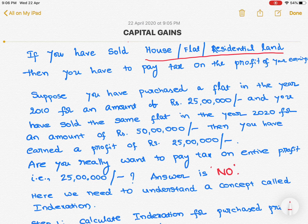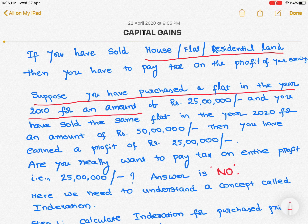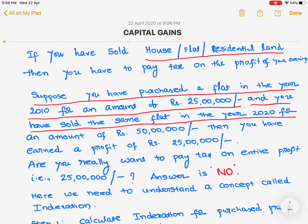For illustration purposes, consider this example. Suppose you purchased a flat in the year 2010 for Rs. 25 lakhs, and you sold the same flat in the year 2020 for Rs. 50 lakhs. So how much profit have you earned? You have earned 25 lakhs.